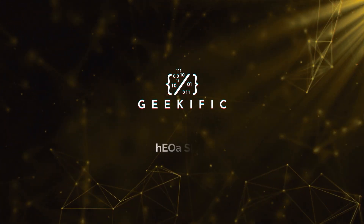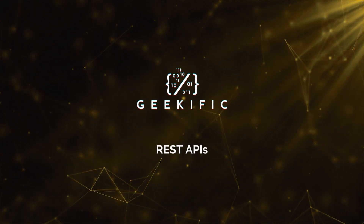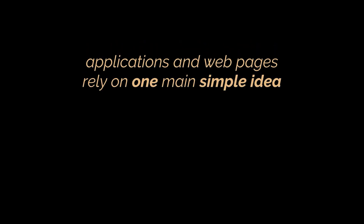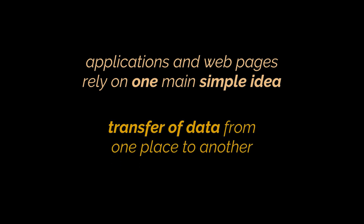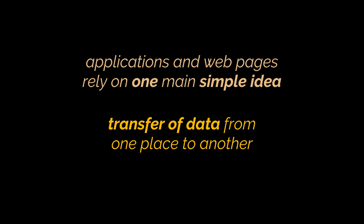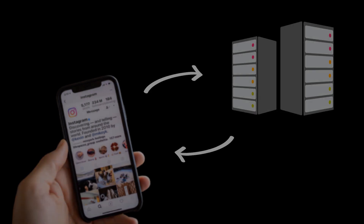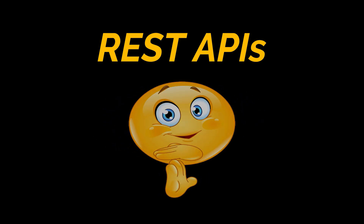What's up geeks and welcome to the channel. Since the invention of the internet, applications and web pages rely on one main simple idea: the transfer of data from one place to another. Say you're looking at a picture on Instagram — this picture is most probably being fetched from a server, then loaded back into the application, making it possible for you to view it. One way this communication is made possible is via REST APIs.